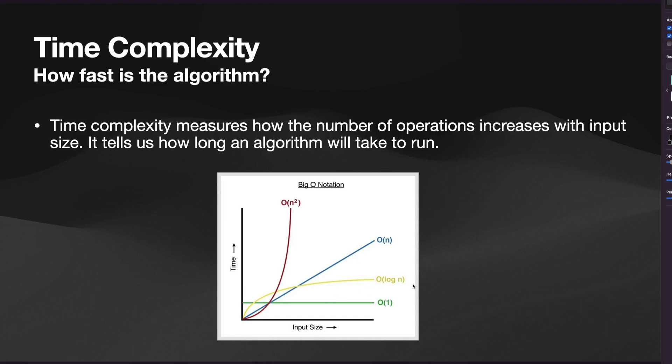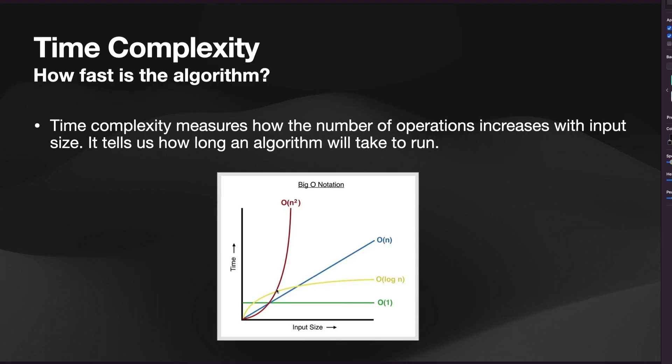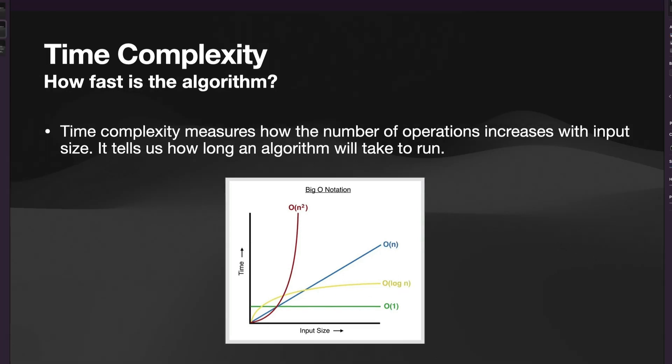Next up, we have logarithmic time. So the problem size shrinks with each step, right? Or essentially, as the input size grows, our algorithm becomes increasingly faster. Well, it doesn't actually get faster, but it takes less and less time as the input size increases, right? So that runs in logarithmic time. Next up, we have linear time. So here, the runtime grows directly with input size with a linear relationship between input size and time.